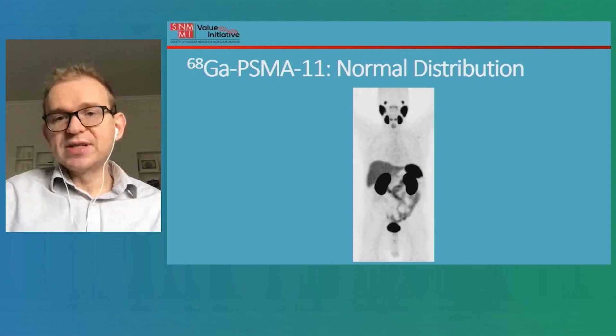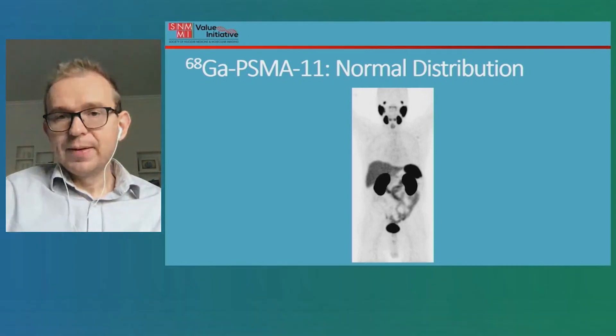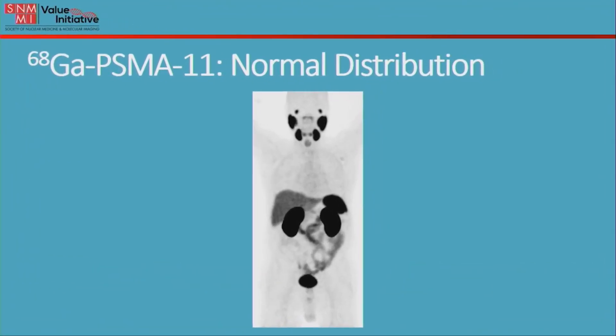Let's take a look at what normal PSMA PET images look like. In a typical PET scan, it doesn't look like a normal person because only some tissues light up. In the region of the head, we see a lot of lighting up of the lacrimal and salivary glands — the tissues that make saliva. There's very little normal uptake in the chest. In the abdomen, we see the liver, spleen, kidneys, bowel, and bladder — all normal, indicating the ways this tracer is cleared through the body.